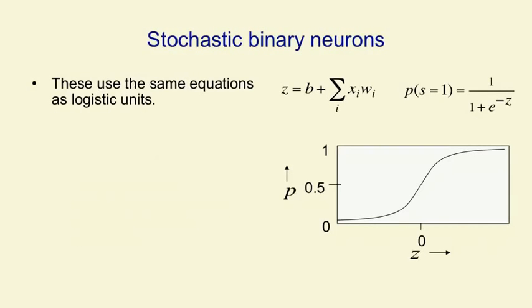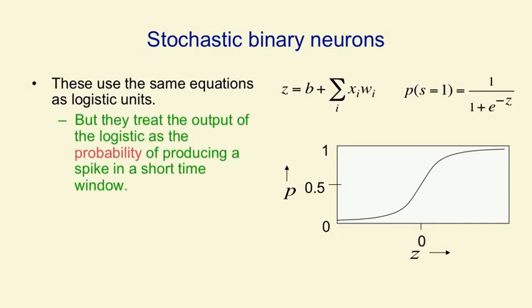Finally, the stochastic binary neurons. They use just the same equations as logistic units. They compute their total input the same way, and they use the logistic function to compute a real value, which is the probability that they would output a spike. But then instead of outputting that probability as a real number, they actually make a probabilistic decision. And so what they actually output is either a 1 or a 0. They're intrinsically random. So they're treating the p as the probability of producing a 1, not as a real number.